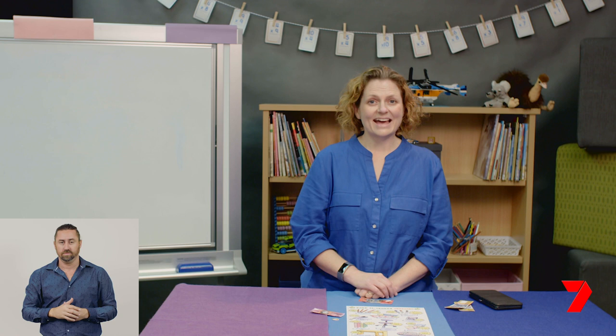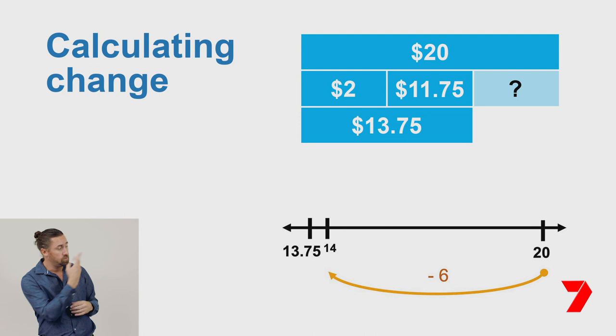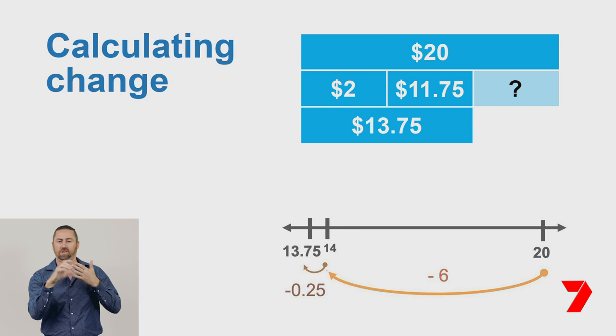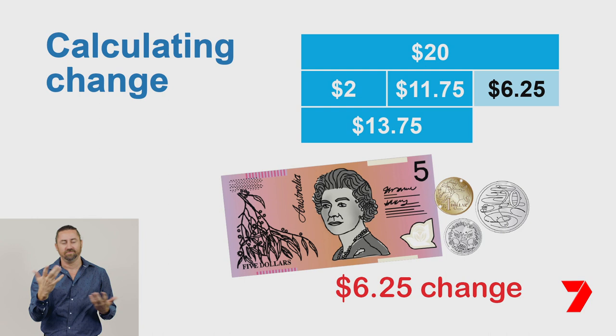Let's try it using a different method. Let's calculate the change by counting back from $20 to $13.75. Take away $6 to get to the nearest whole dollar, that's $14. Then count back another $0.25 to end up at $13.75. Our change will be $6.25. We have just checked our answer.